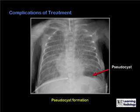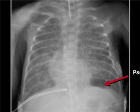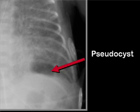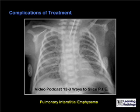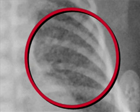This is an example of a pseudocyst. There is hyaline membrane disease in both lungs, and in the left lower lobe there is a cystic lucency representing the formation of a pseudocyst from hyaline membrane disease treatment. This is an example of pulmonary interstitial emphysema. You can see very small bubbles of air in the interstitium of the lung in this close-up.